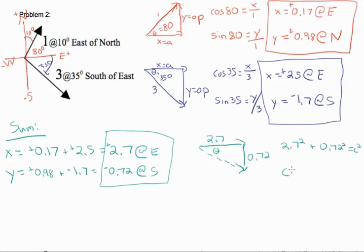To find our theta, we do tangent. So our theta equals opposite over adjacent. So our theta is 15 degrees.